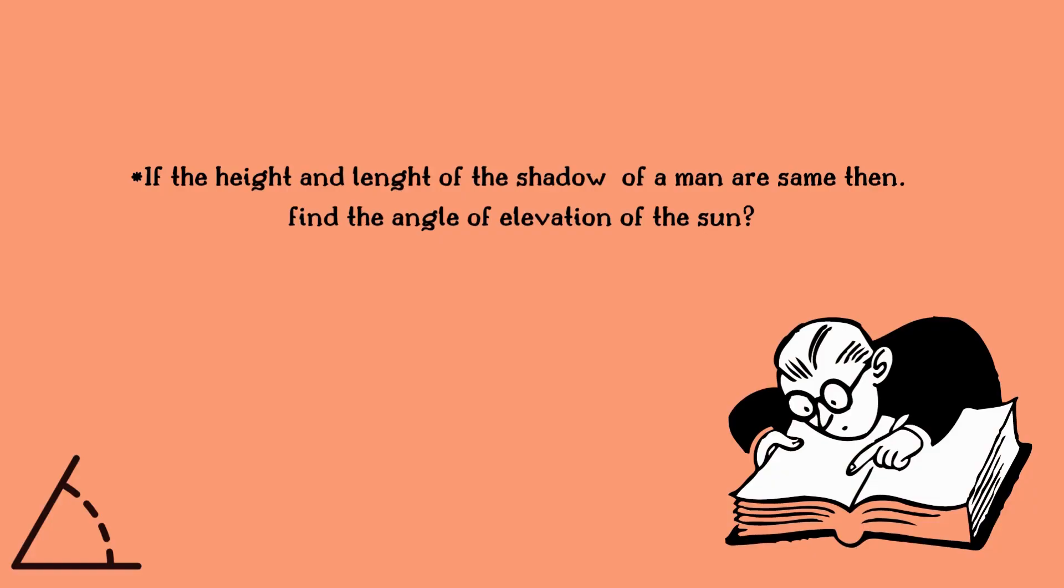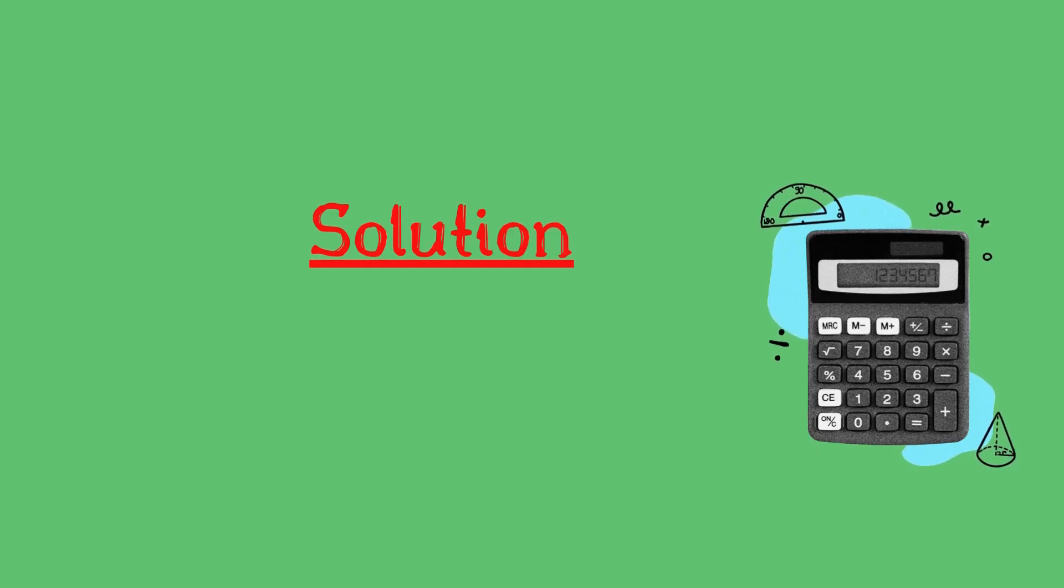Let us see the first one. If the height and length of the shadow of a man are same, then find the angle of elevation of the sun. Let us see some solutions on it.